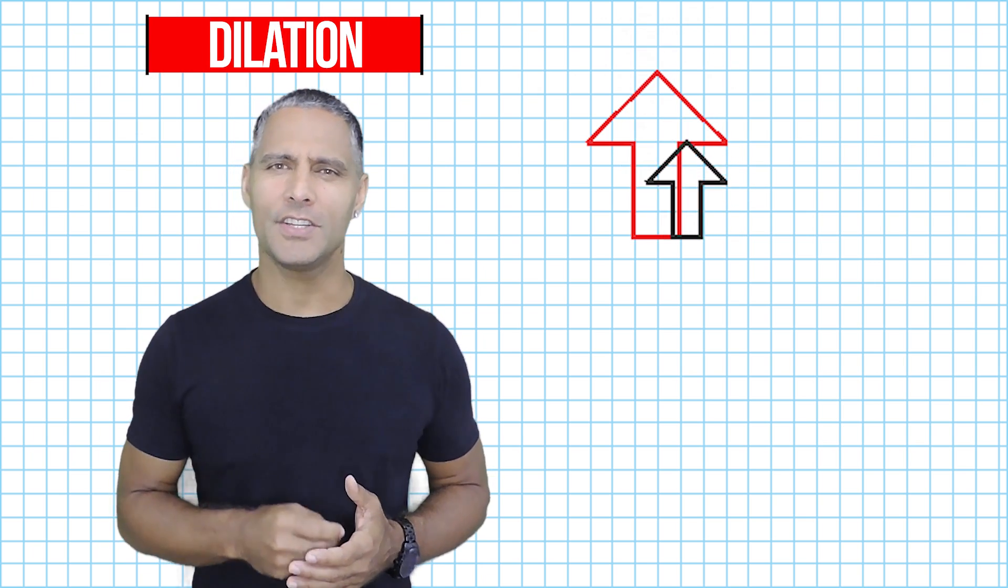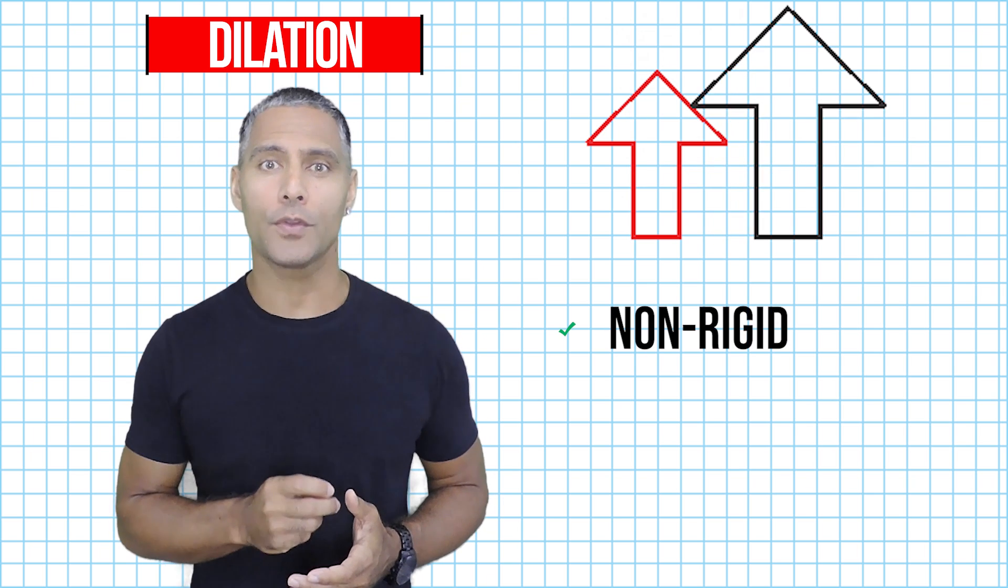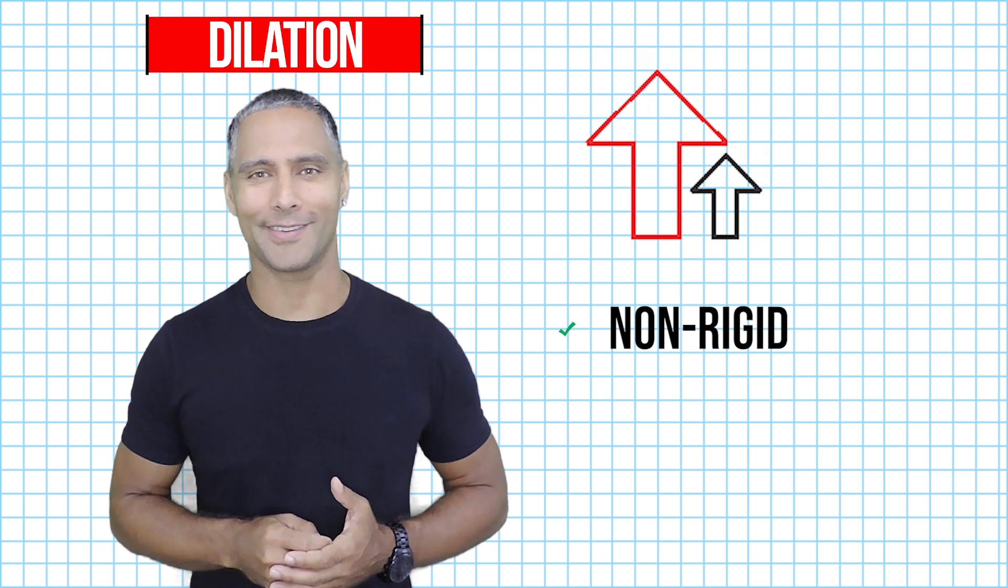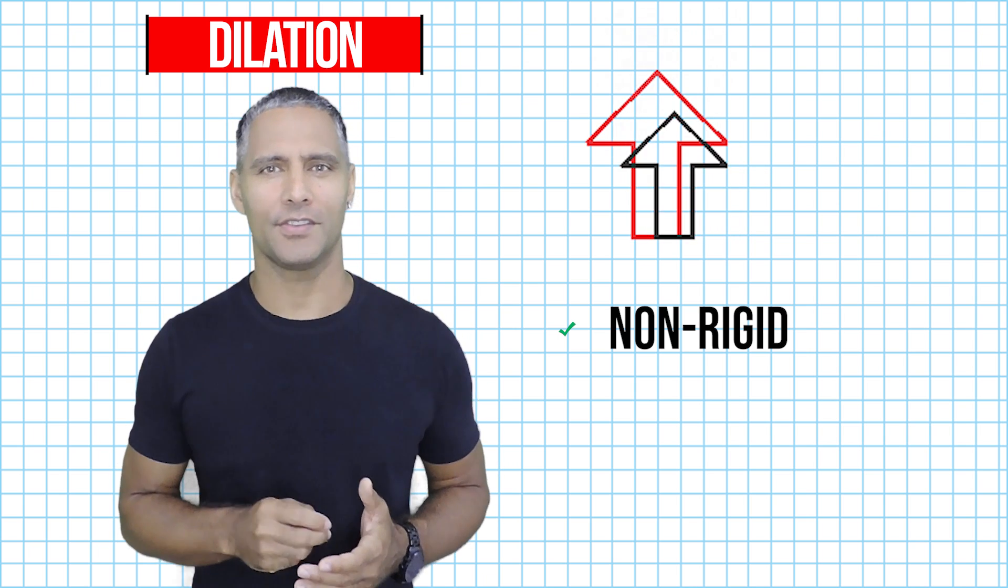Dilations are non-rigid transformations because the size changes. Therefore, the two objects are not congruent to each other. Although the sizes are different, we should notice that the shape is still the same.